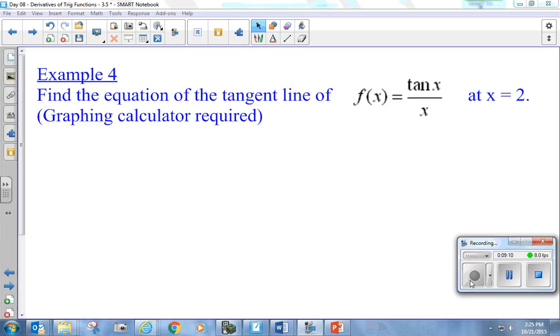Find the equation of the tangent line of the function f of x equals tan of x over x, right at x equals 2. Well, instead of using f of x plus h, minus f of x over h, we know the tangent line slope can just be the derivative, right? Low d high minus high d low, draw a line square below.